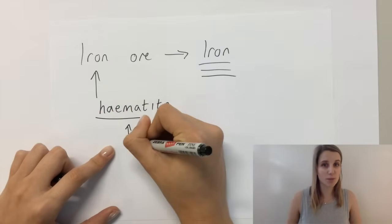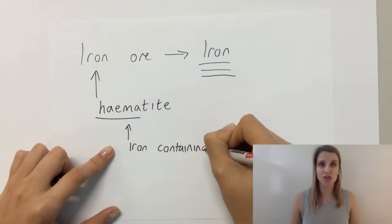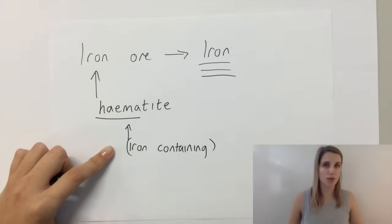Heme, you might have seen as a prefix before, it means iron containing, just the same as in hemoglobin, which is the iron that's contained in your red blood cells.